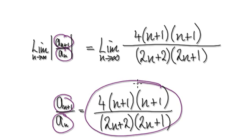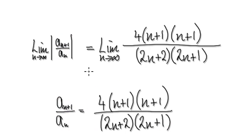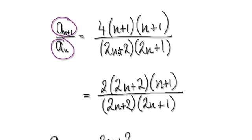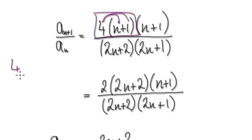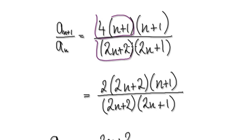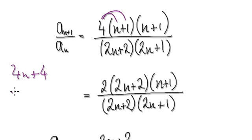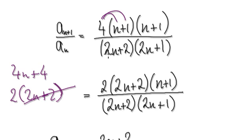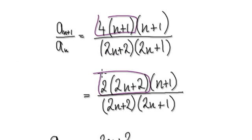We are not looking at the limit of this — we are just purely looking at the next term divided by the current term, which equals this. So when you look at this block here, if you multiply this out you will get 4m plus 4. If you multiply this out, this would be 4m plus 4, and then factor out the 2. So this will cancel out with this here, and we write this as this.